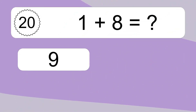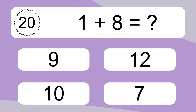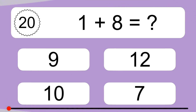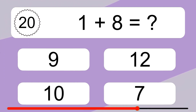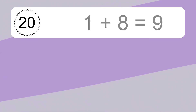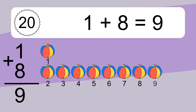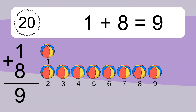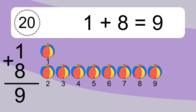1 plus 8 equals what? 1 plus 8 equals 9. Let's count it. 1, 2, 3, 4, 5, 6, 7, 8, 9.